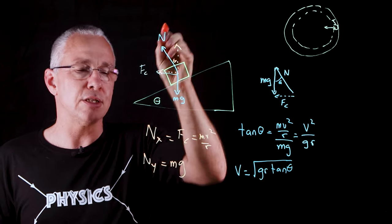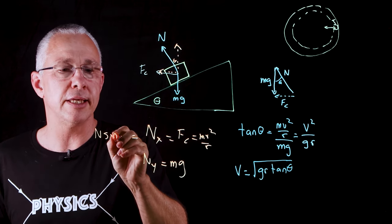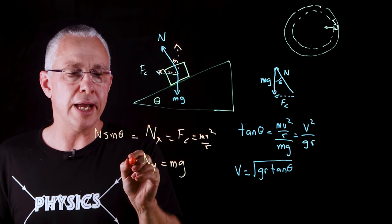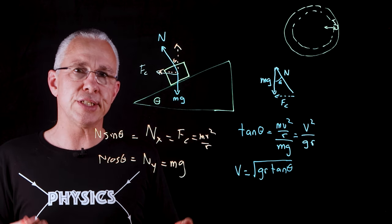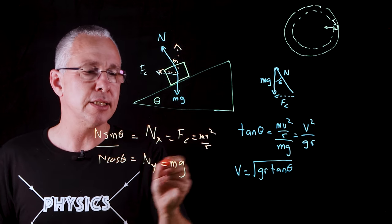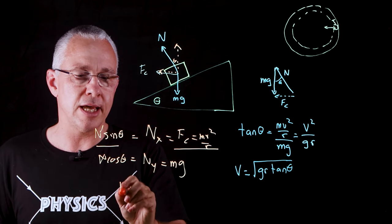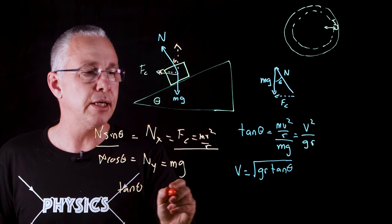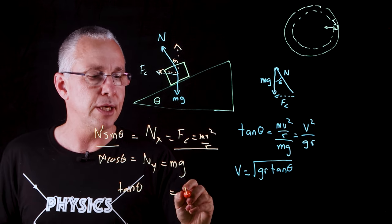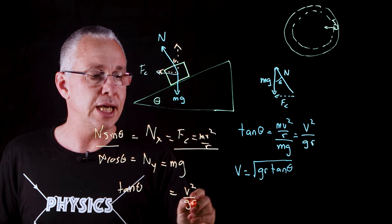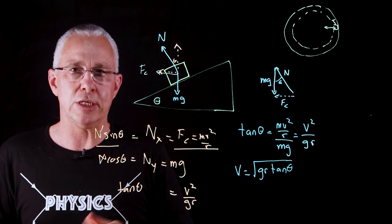Now Nx ends up being N sin θ and Ny ends up being N cos θ. And now what you can see is if I divide this and then divide this, my N's cancel out, I have tan θ on the bottom, and then I end up getting exactly the same I had before and that is v² over gr. I get exactly the same relationship I had before but this time we did component analysis.